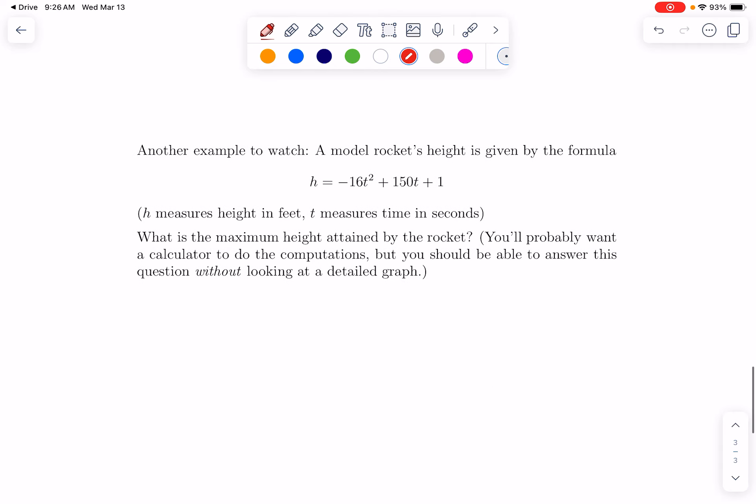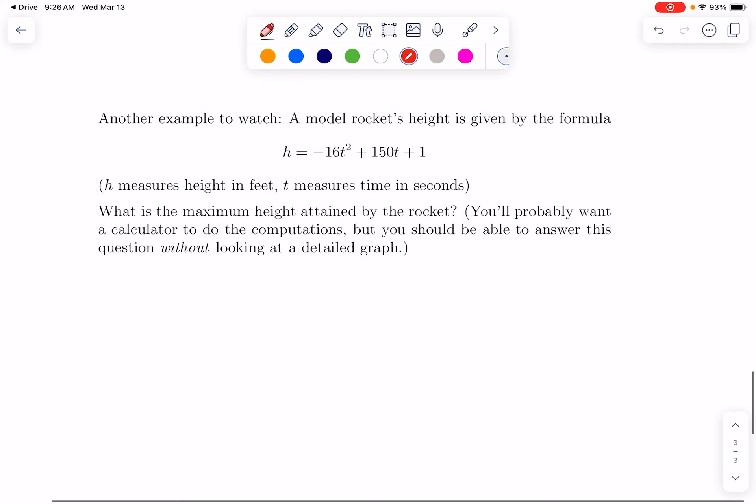But in this section, there's also just a little bit about how can we use what we know about quadratics to solve word problems. So let's just look at this. A model rocket's height is given by this formula, where h is measured in feet and t time is measured in seconds. So let's just take a look at this. Just from the form, we can say, oh, it's quadratic. There's a t instead of an x, but it has that x squared pattern. And the leading coefficient is negative.